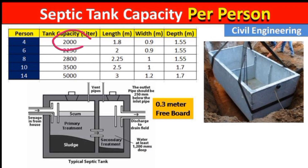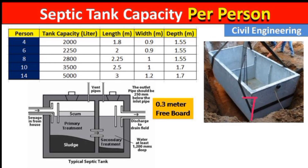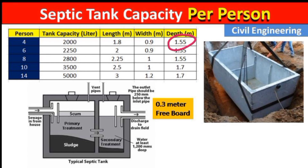If there are six persons, the tank capacity should be 2250 liters. The length should be 2 meters, width should be 0.9 meters, and depth is again 1.55 meters. The depth of the septic tank generally remains the same in most cases, though in some cases it may be 0.2 to 0.3 meters more. Using 1.55, 1.6, or 1.7 meters depth would be fine.